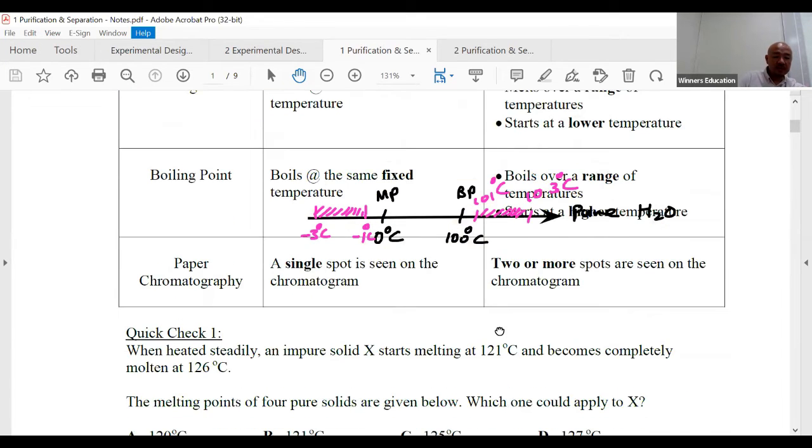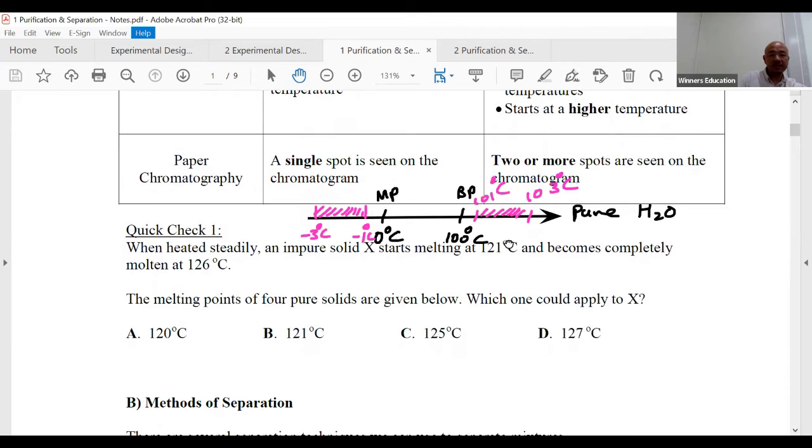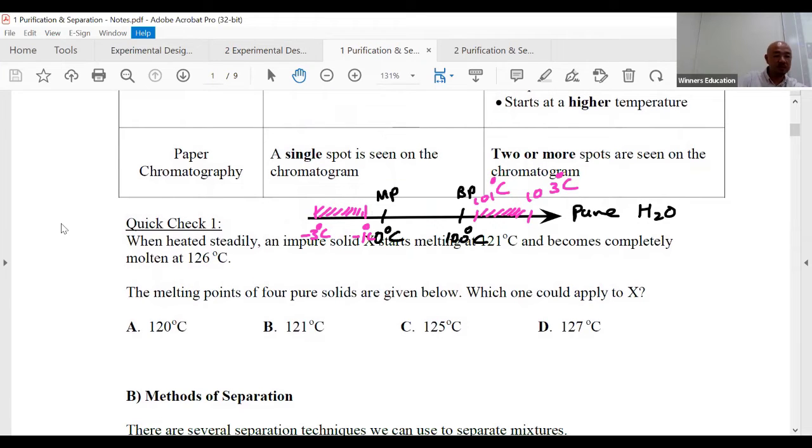The third method of looking at whether something's pure or not is known as paper chromatography. All right, in Singlish I call it chromatography. So if it's pure, you only have a single spot seen on the chromatogram. If it's impure, then I will see two or more spots, basically more than one spot seen on the paper called chromatogram. Basically only three ways to find out whether something is pure at our level.